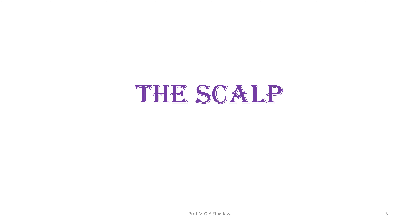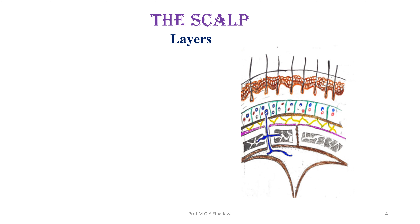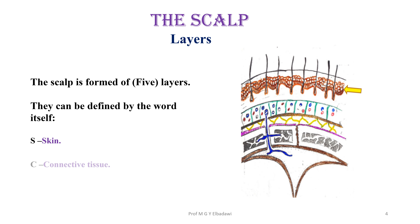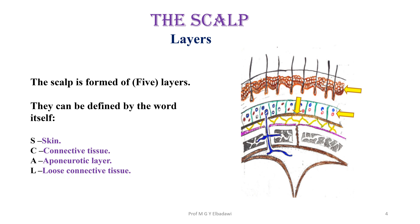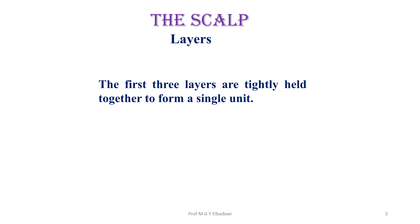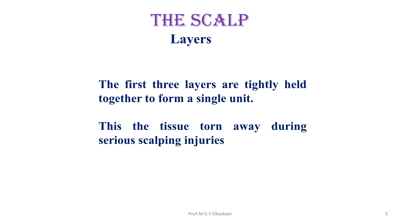We'll start with the scalp anatomy. The layers of the scalp are five layers starting from the skin, the connective tissue deep to it, the aponeurotic layer, a layer of loose connective tissue, and lastly the pericranium. The first three layers are very tightly held together to form a single unit — this is the tissue torn away during serious scalping injuries, when those three layers come together.